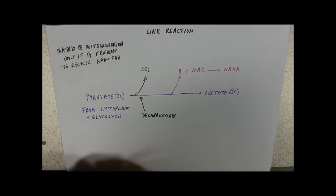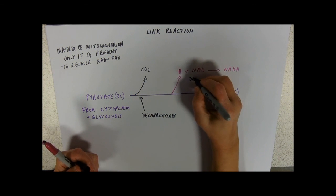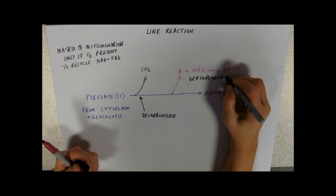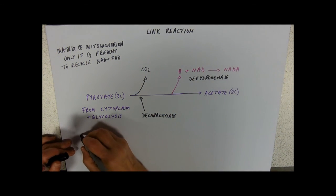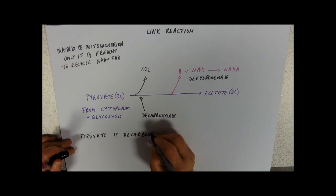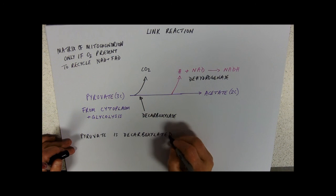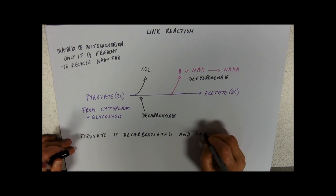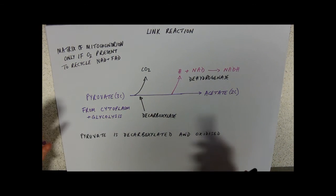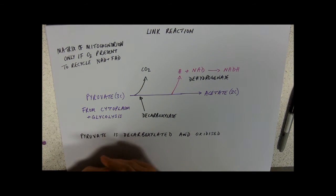Our enzyme to take away hydrogen is a dehydrogenase. In this reaction, pyruvate is decarboxylated and it's lost hydrogen. Oxidation is loss. It is oxidised. And our NADH is reduced. And what we make is this two carbon compound called acetate.